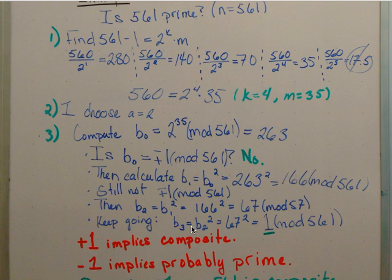So we keep going. So b3 equals b2 squared, or 67 squared. So 67 squared, we find is equal to 1 mod 561.